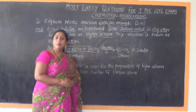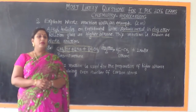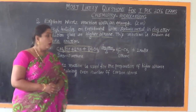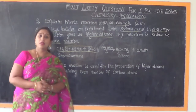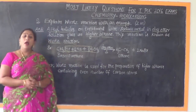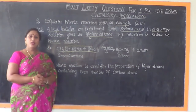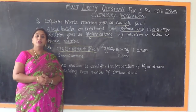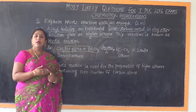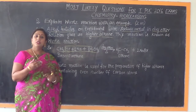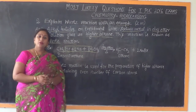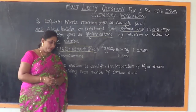Another important point to note and write down is that Wurtz reaction is an example of an ascent series reaction. Ascent series reactions are those in which there is an increase in the carbon chain length.